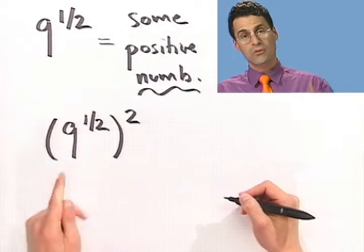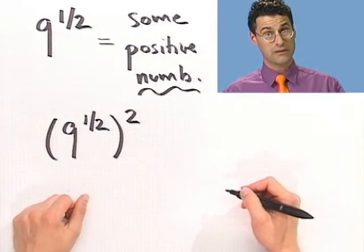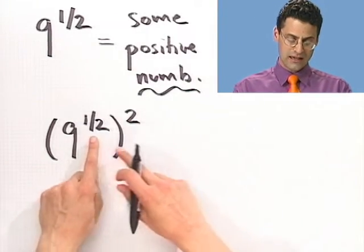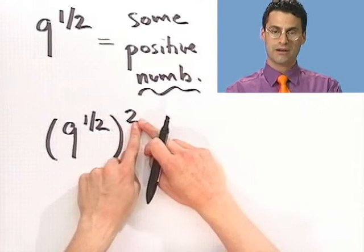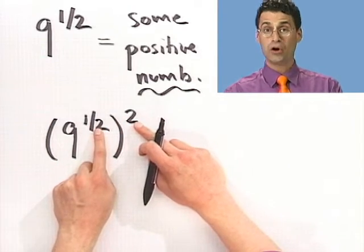If I were to square it, we're now going to use one of the properties of exponents that we already talked about. Namely, if you have something to a power and then raise the whole thing to that power, what do you do with these guys? You multiply.